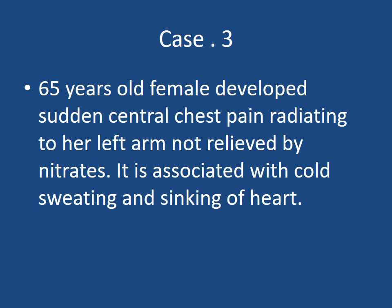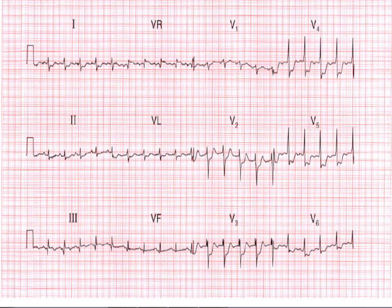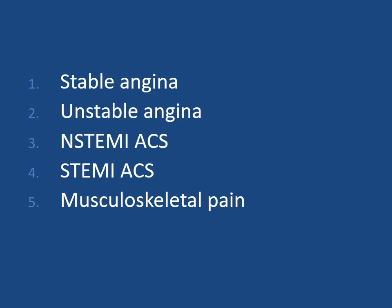Case 3: A 65-year-old female develops sudden central chest pain radiating to her left arm, not relieved by nitrates, associated with cold sweating and sinking feeling in the heart. Pulse 100 per minute, blood pressure 160/100, temperature 98°F, respiratory rate 15 per minute. ECG shows ST segment depression in lead I, AVL, V2, V3, V4, V5, and V6. Cardiac enzymes are raised and Troponin T is positive. The diagnosis is NSTEMI — non-ST segment elevation MI.